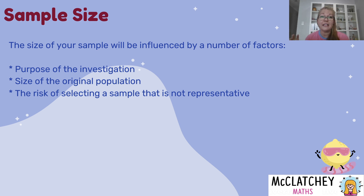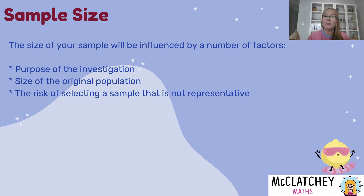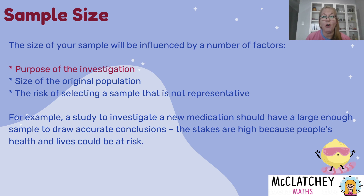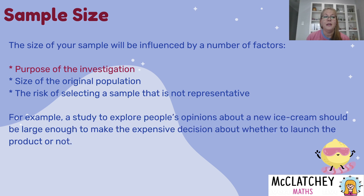If I only do a study with 10 people, I might miss people who have adverse reactions to medications or dangerous interactions between medications — and I might end up harming people with a future medication. So it's important the people I choose are representative of the bigger group. When medication is involved, the stakes are high and we need to draw accurate conclusions.